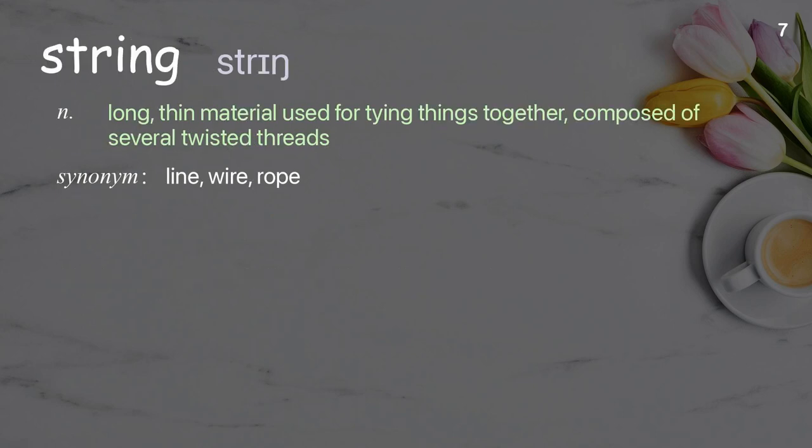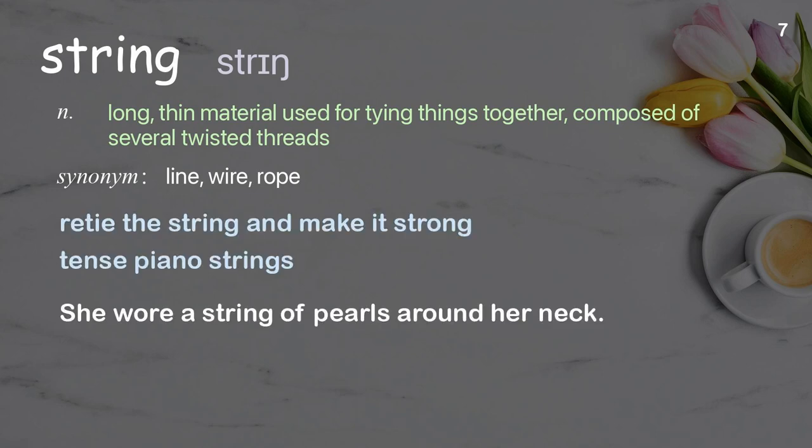String: long, thin material used for tying things together, composed of several twisted threads. Examples: re-tie the string and make it strong, tense piano strings. She wore a string of pearls around her neck.